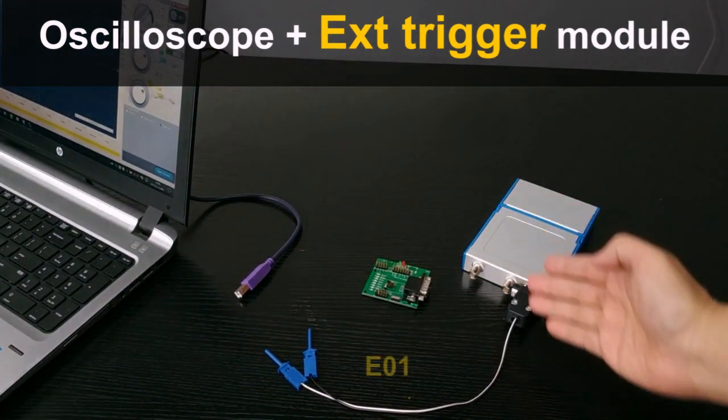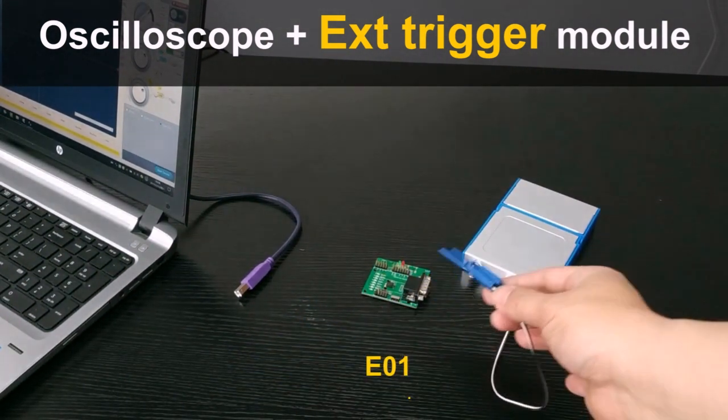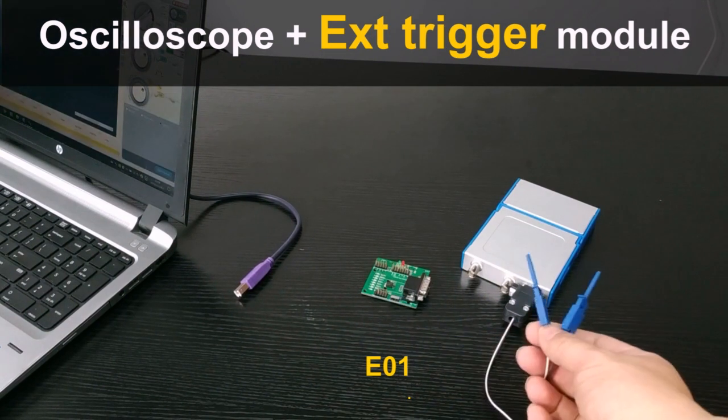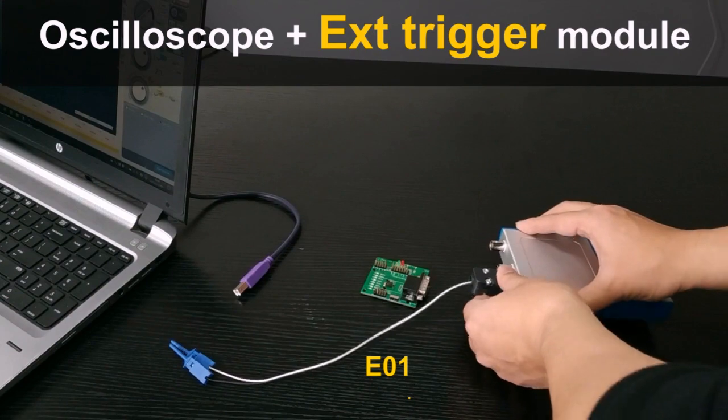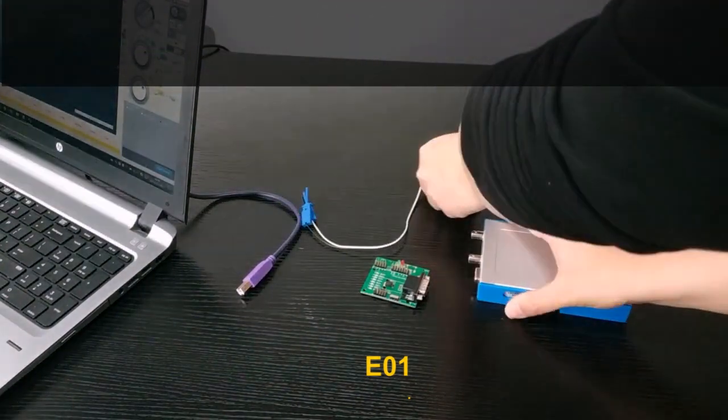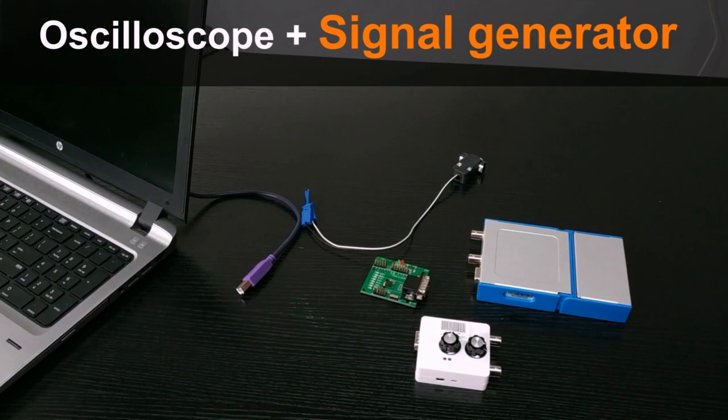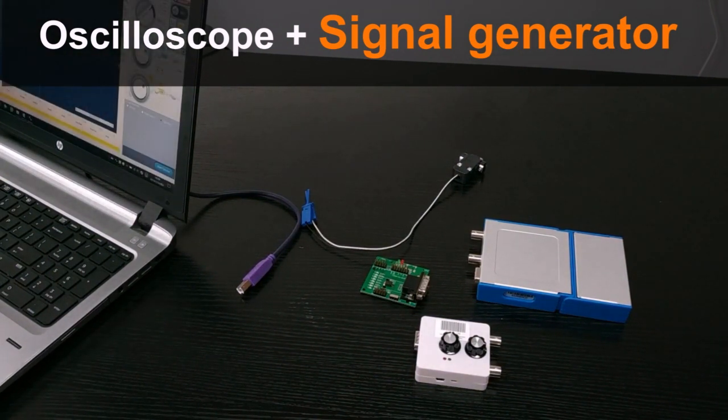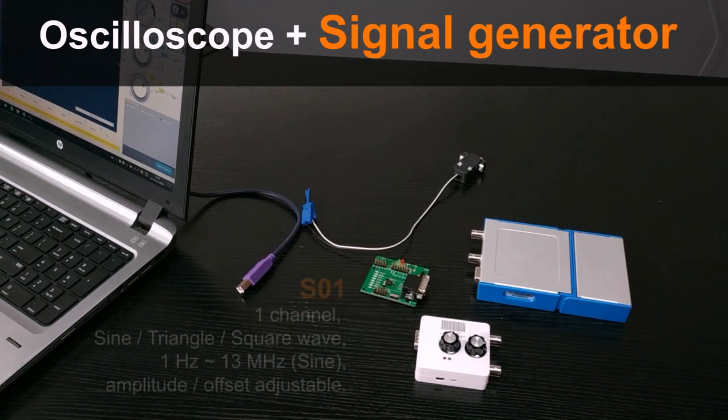We can change this amplitude with the first knob on the device. The amplitude can go from 0 to 4V. The second knob allows us to change the DC component of the wave. So with this second knob we can shift the wave up and down.